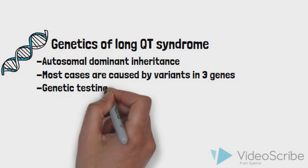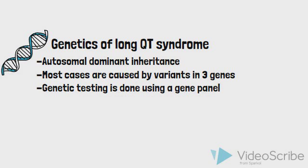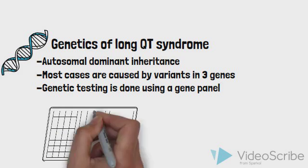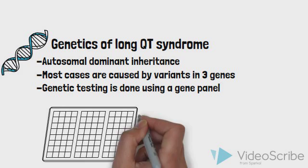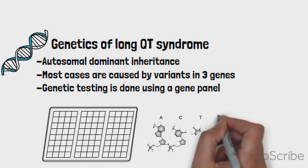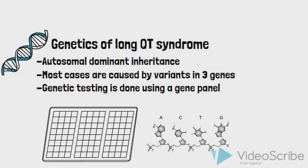The most common form of genetic testing done to confirm a diagnosis of hereditary long QT syndrome is a gene panel. This type of test uses next generation sequencing to assess the patient DNA sequence of genes associated with long QT syndrome. The sequences in a sample are then compared to the reference human genome to look for disease-causing variants. This information can be used in combination with a patient's history to help predict the risk of cardiac events.